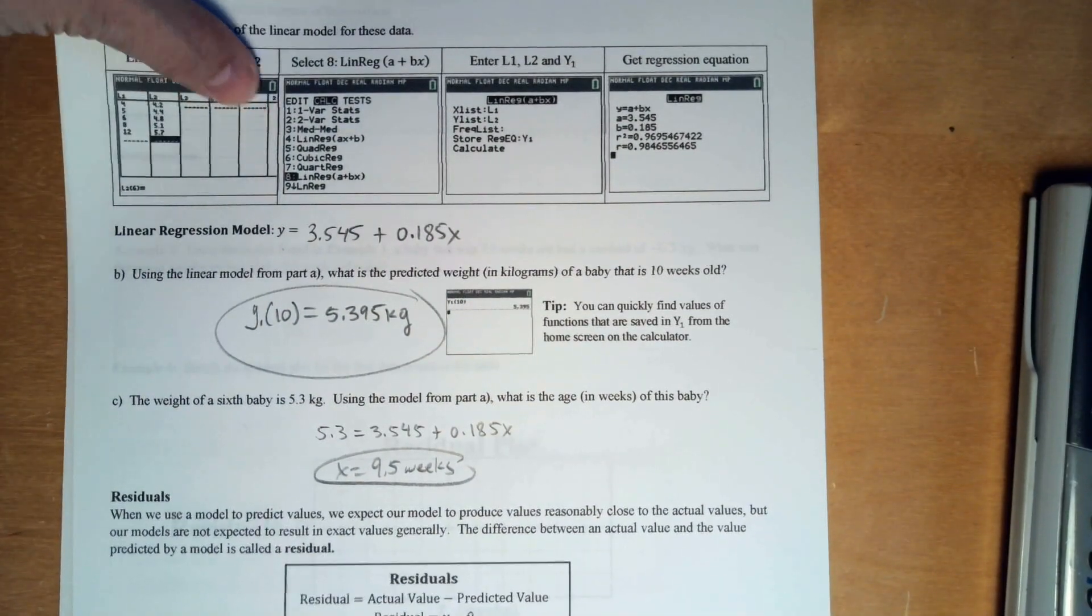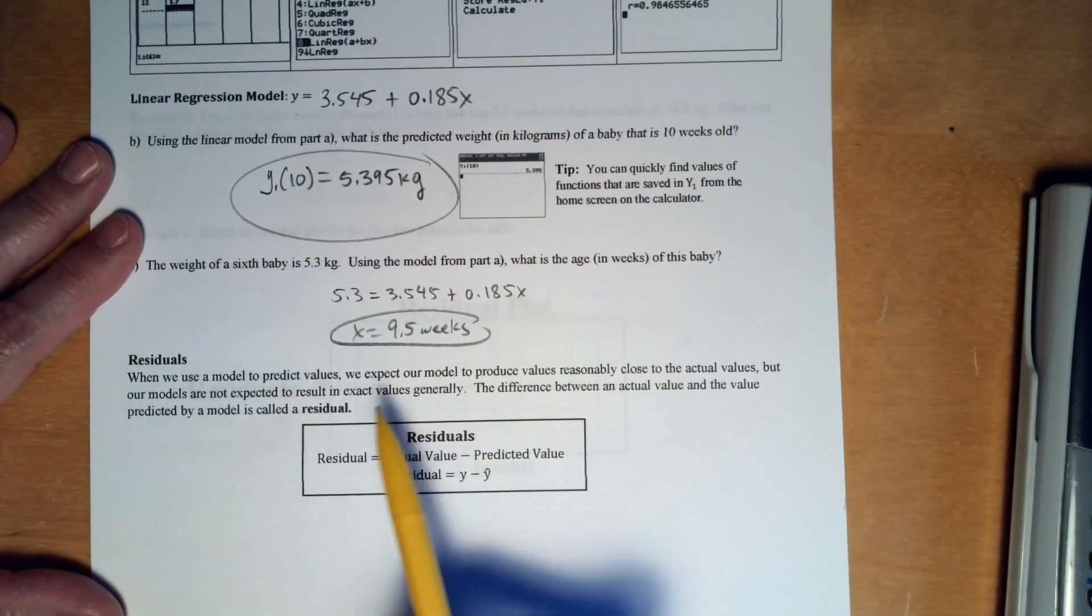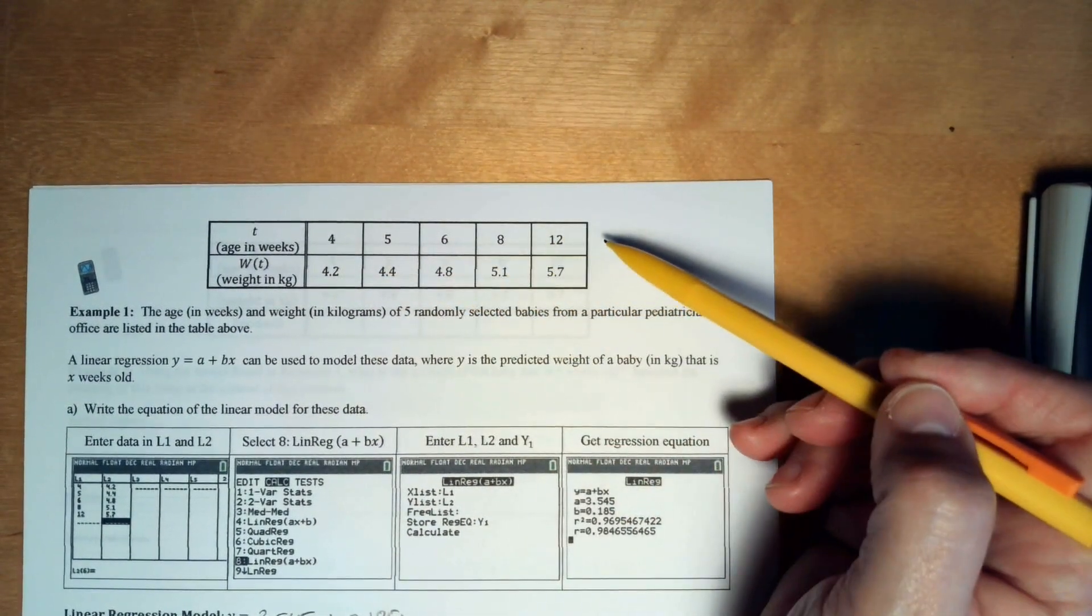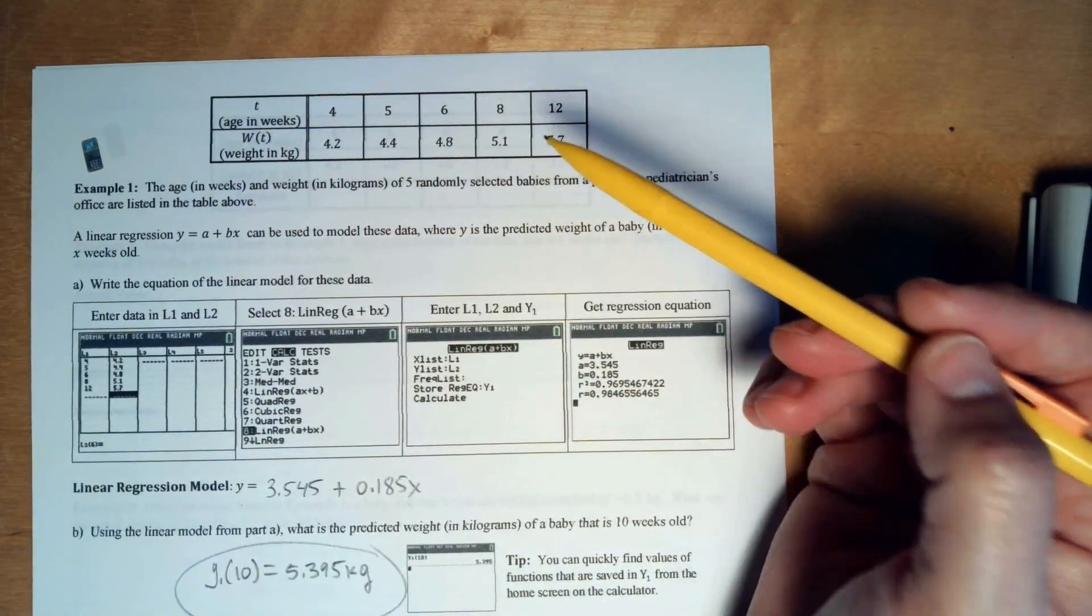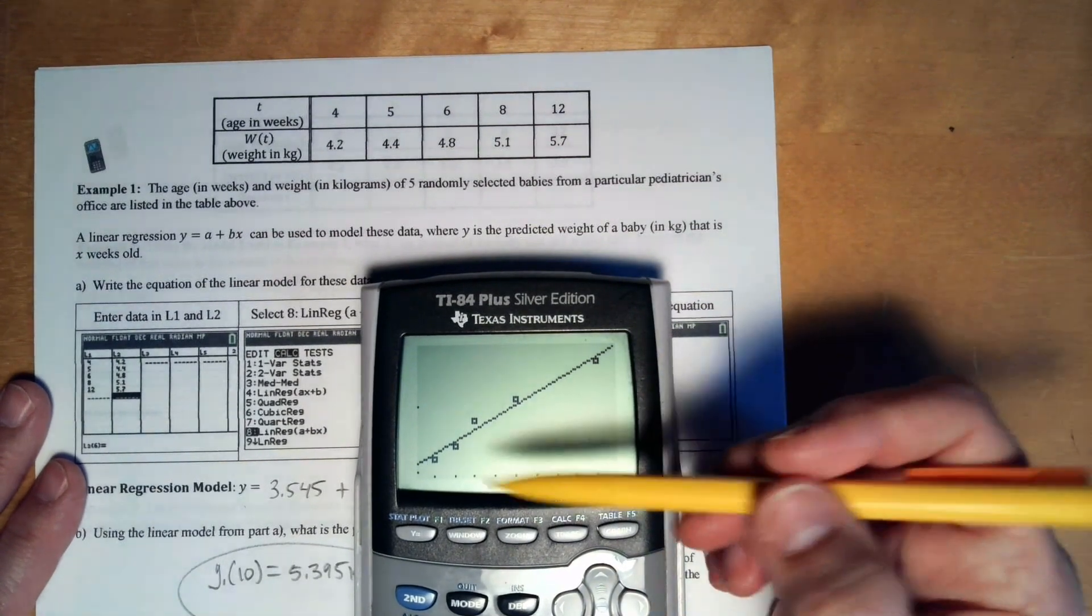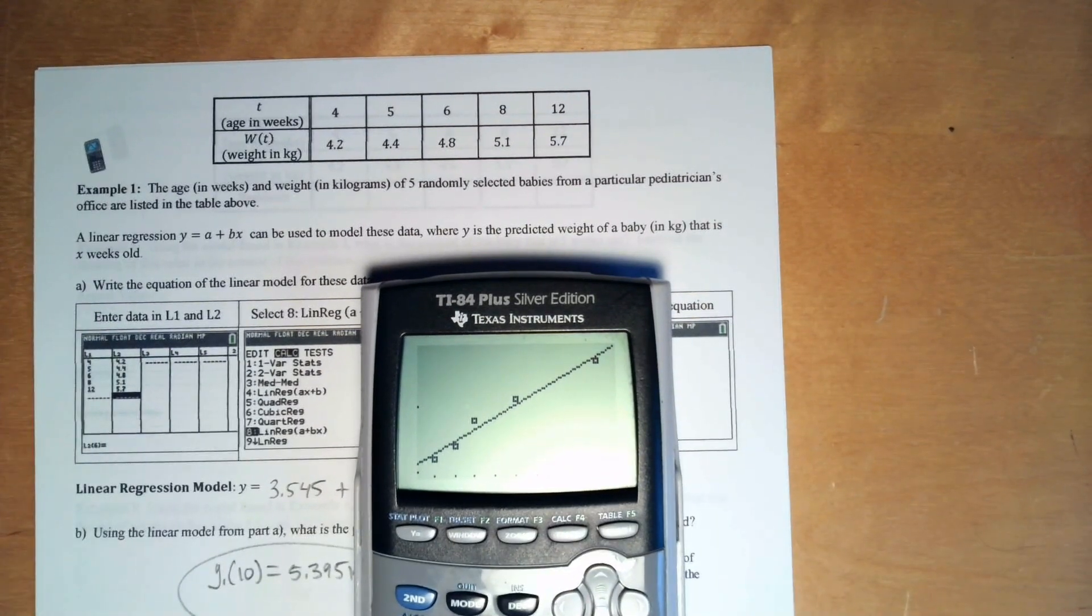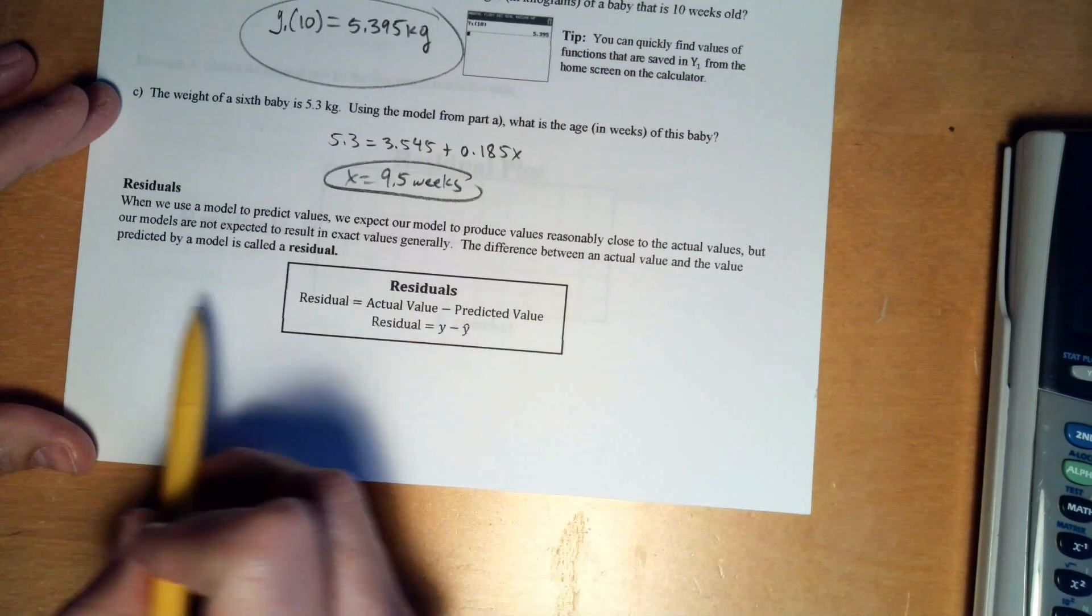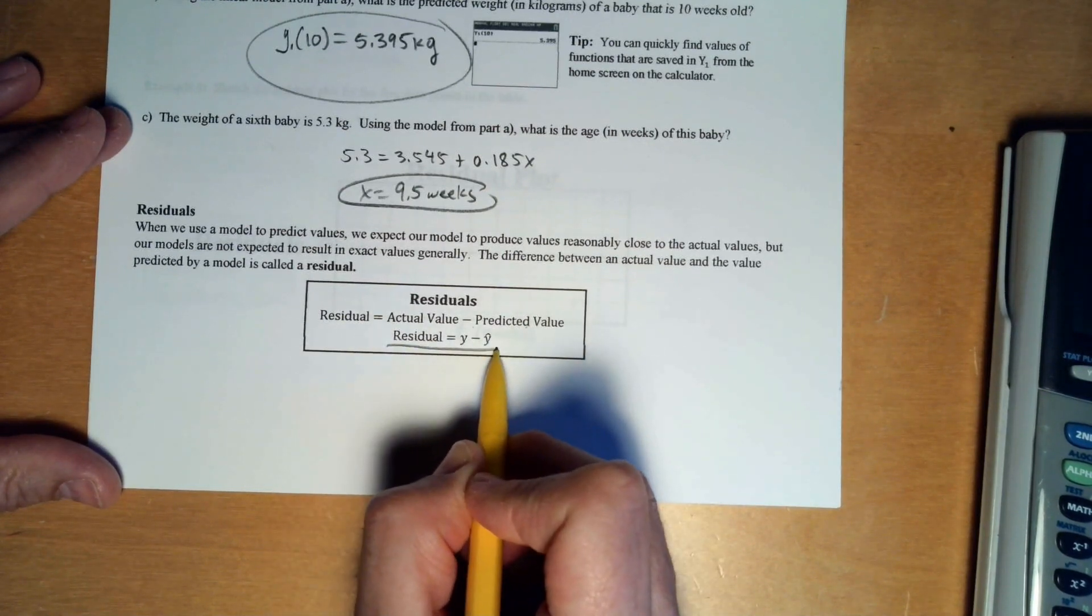Alright, so there's a thing that you do in statistics, and we're going to do it here too, but it's called residuals. So when you use a model to predict values, the model doesn't always get right on target. Like if I plugged, even though this is the data that I had, if I plug 5 into this equation we got or any of these numbers, I'm not always going to get exactly that. I mean some of them might be spot on, but actually you can see from the picture, actually none of them are spot on.